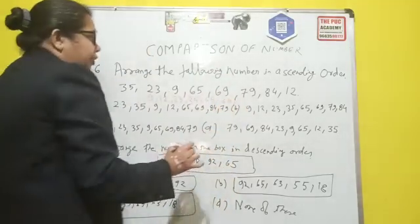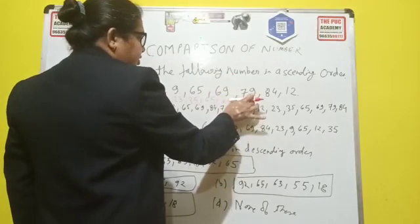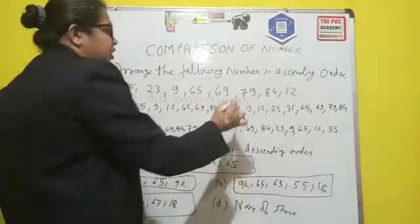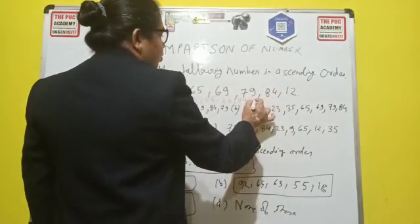After that you see the numbers. On 10th position there is a 7. So 79. And on 10th position there is a number 84. So 84.